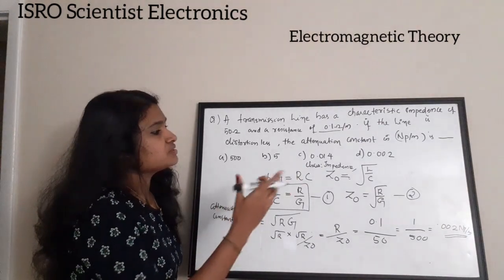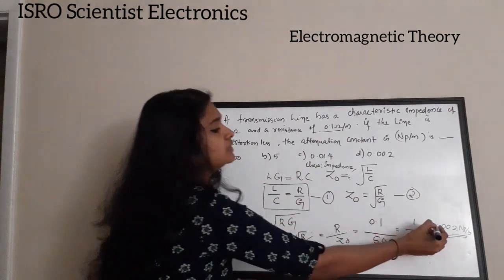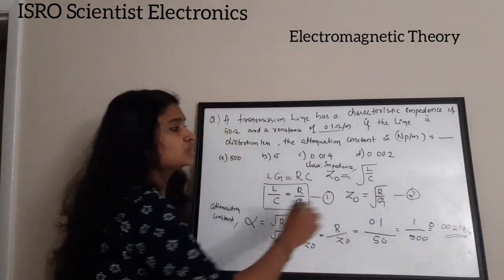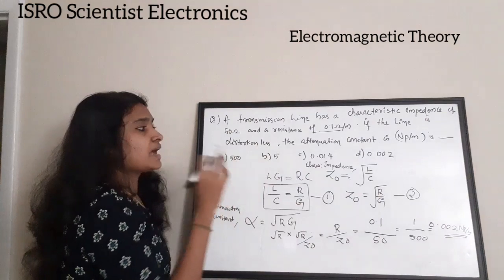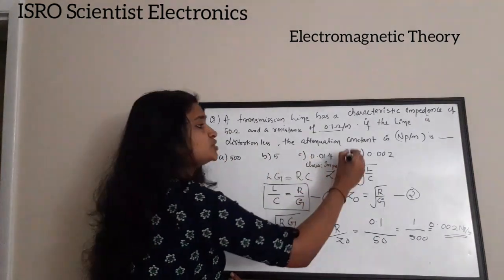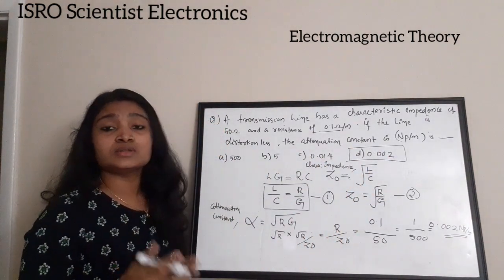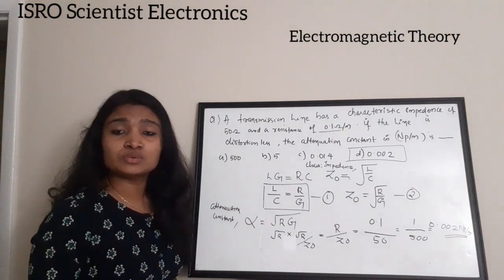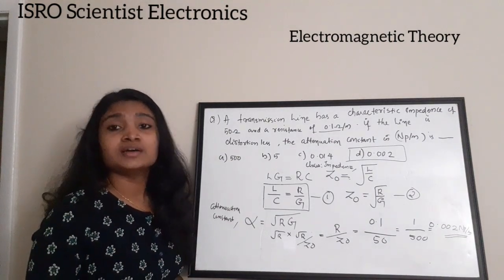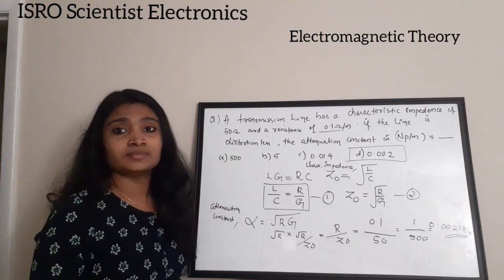From the options, option D is 0.002, so the correct answer for this question is option D: 0.002 Neper per meter.